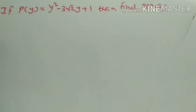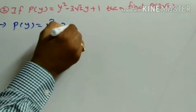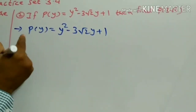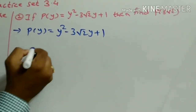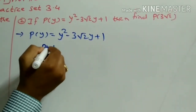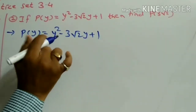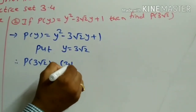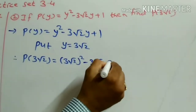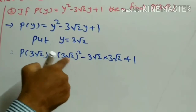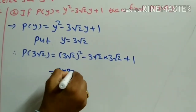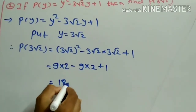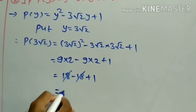The second example is: if p(y) = y squared minus 3 root 2 times y plus 1, then find the value of p(3 root 2). Given polynomial is p(y) = y squared minus 3 root 2 y plus 1. To find p(3 root 2), put y equal to 3 root 2. So p(3 root 2) = (3 root 2) squared minus 3 root 2 into 3 root 2 plus 1. Square of 3 root 2 is 9 times 2 equals 18. Minus 9 times 2 equals 18 plus 1.